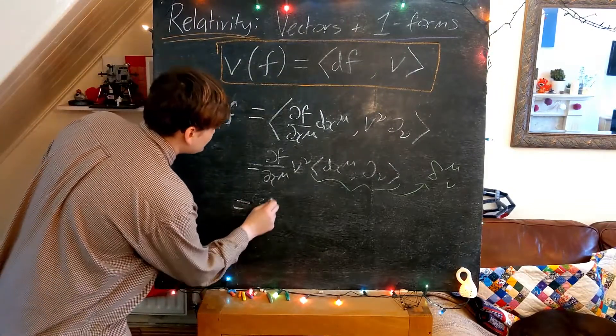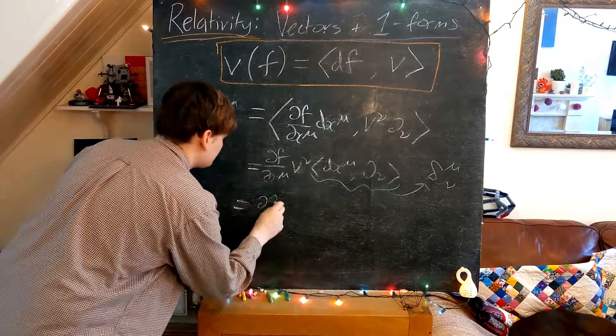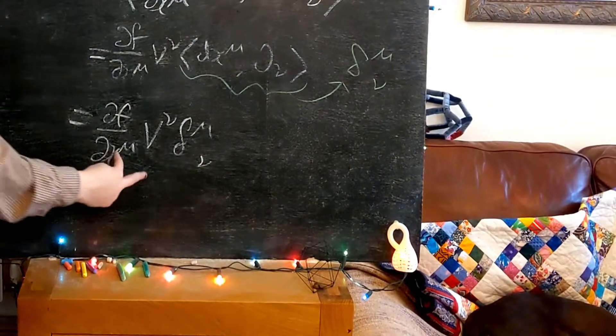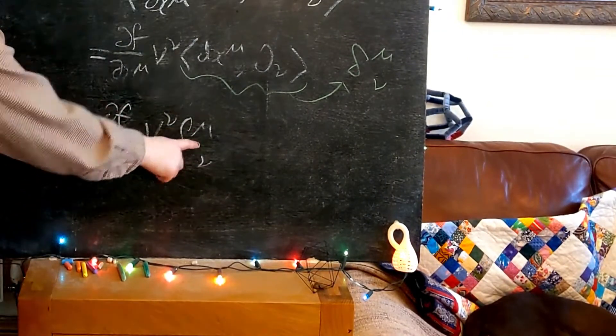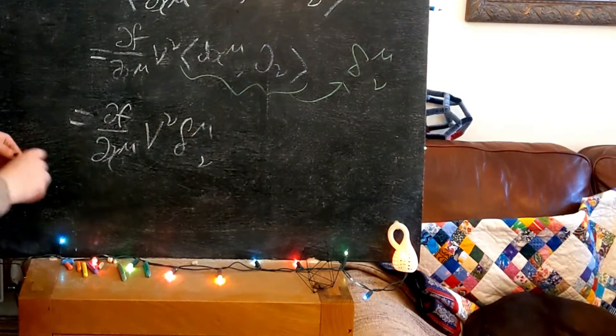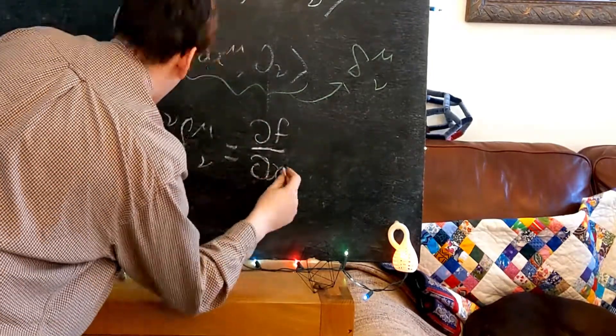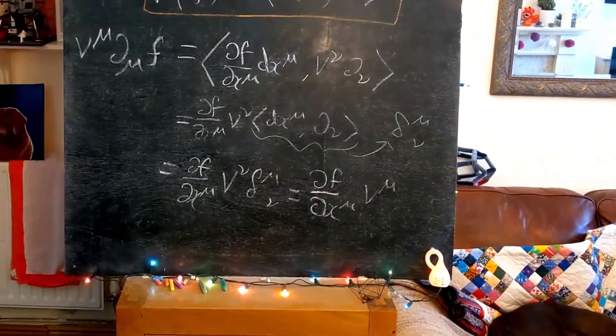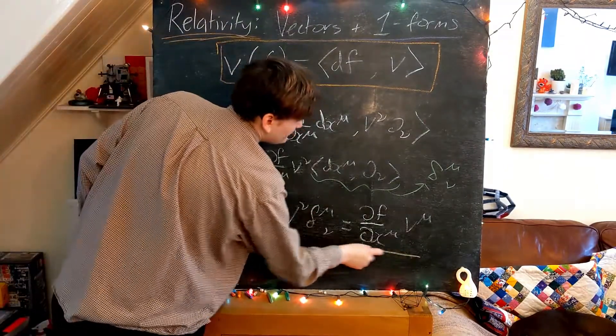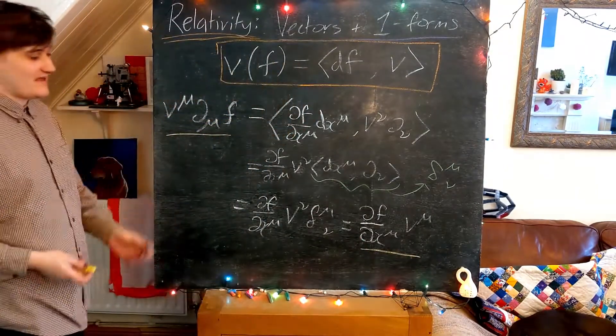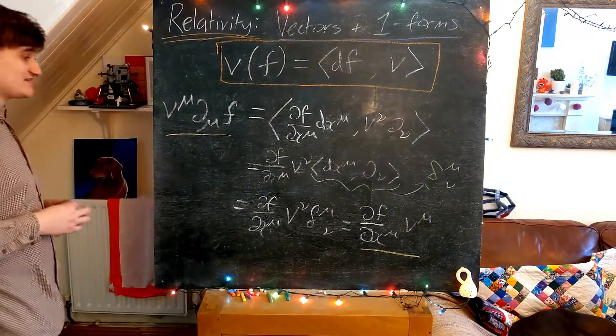Whenever we see the coordinate one-form and the coordinate basis contracted together, it's just simply a Kronecker delta. So now this is just going to leave us, when we contract all of our indices with the Kronecker delta, essentially we just can set one of these indices equal to the other. And now we're just simply going to be left with that. And now we should realize that these two expressions are essentially the same. So this definition is consistent.